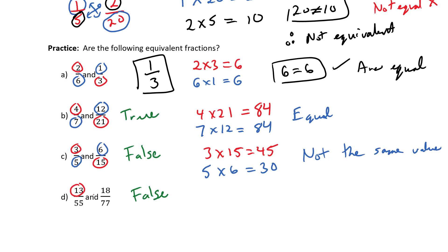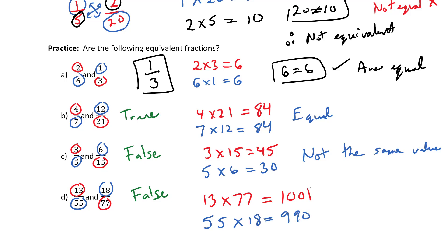For the last question, the cross products are 1,001 and 990 — you can see these numbers are not the same, therefore they are also not equivalent. For simpler fractions like C, you could do that one in your head. But as fractions get larger, working with the cross product rule can be helpful.